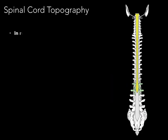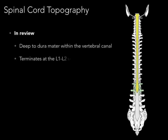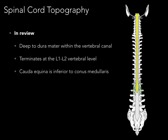In review: the spinal cord is deep to the dura mater within the vertebral canal. It terminates at the L1-L2 vertebral level. The cauda equina is inferior to the conus medullaris and fills that space in the vertebral canal. The spinal cord is less than half a meter long, about 2 centimeters wide, and weighs about 35 grams.